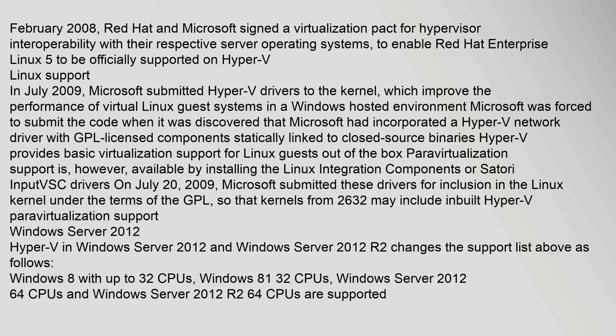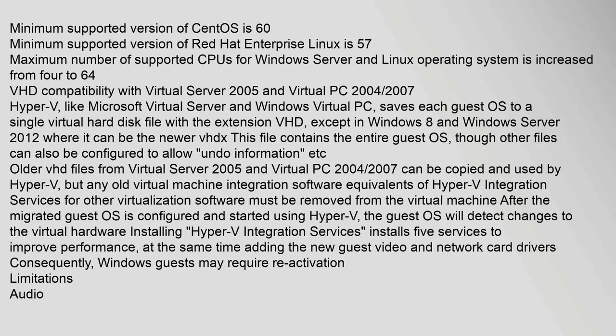Hyper-V in Windows Server 2012 and Windows Server 2012 R2 changes the support list as follows: Windows 8 with up to 32 processors supported; minimum supported version of CentOS is 6.0; minimum supported version of Red Hat Enterprise Linux is 5.7; and the maximum number of supported CPUs for Windows Server and Linux operating systems is increased from 4 to 64.